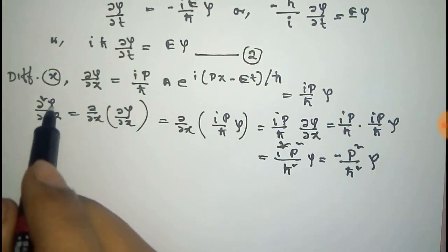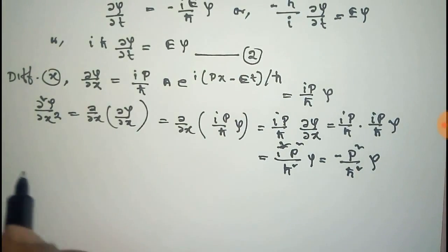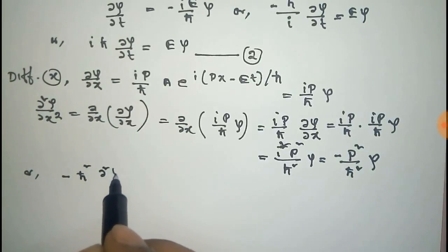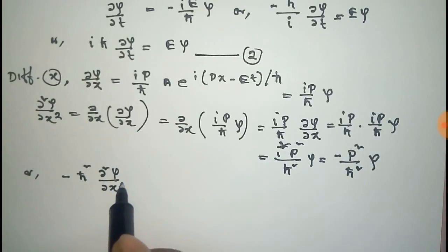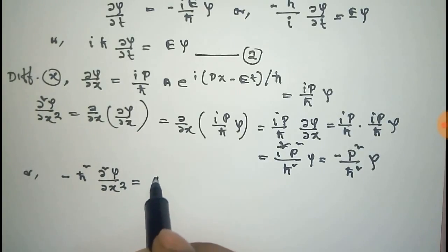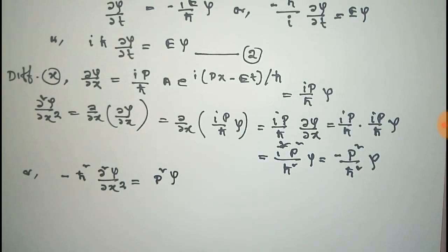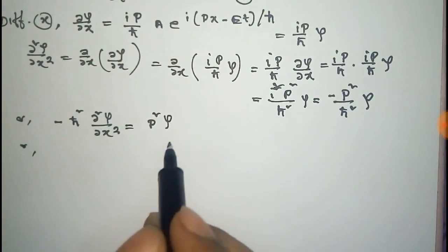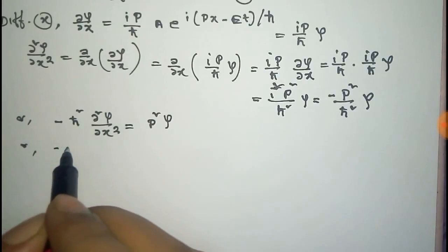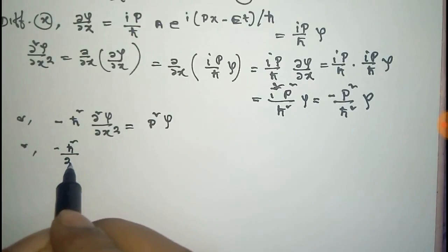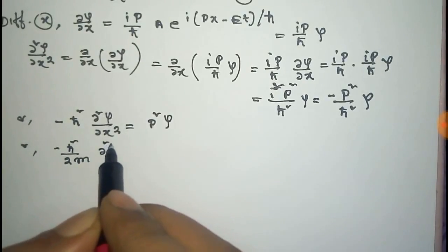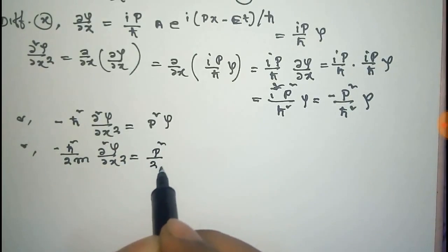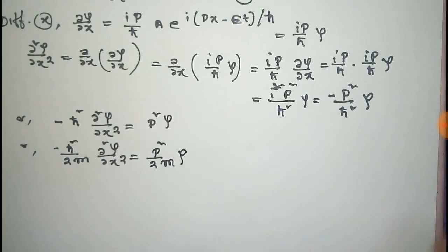Taking −ℏ² across, we get: −ℏ² · ∂²ψ/∂x² = p²·ψ. Dividing the whole equation by 2m on both sides gives: −ℏ²/2m · ∂²ψ/∂x² = (p²/2m)·ψ.